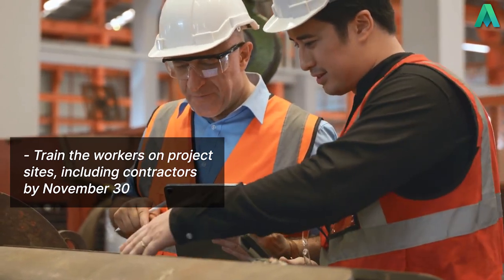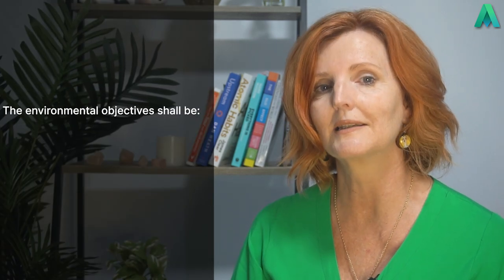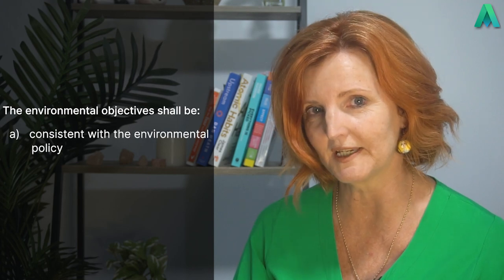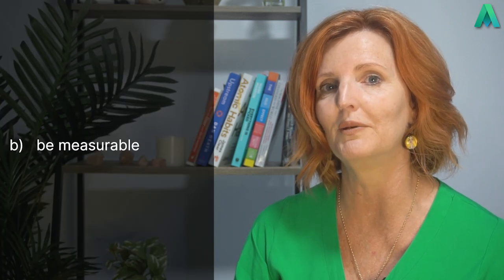Moving along in Clause 6.2.1, it states that the environmental objectives shall be consistent with the environmental policy. When we set our environmental objectives, they need to somehow align with our intent and commitment that we documented in our policy. What a great way to ensure that our intent from our policy is actually met. Be sure to check out our video for Clause 5.2 environmental policy if you need a refresher. Then B states that the environmental objectives are to be measurable — another stroke of genius. Of course, when objectives are set, you need to be able to measure them.